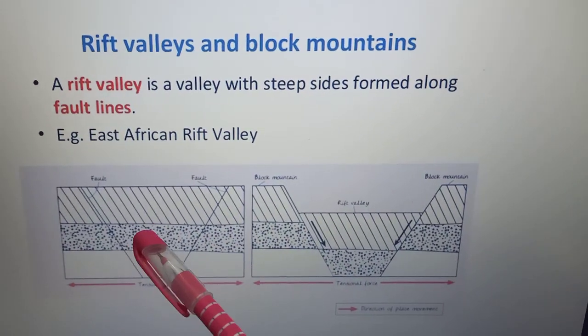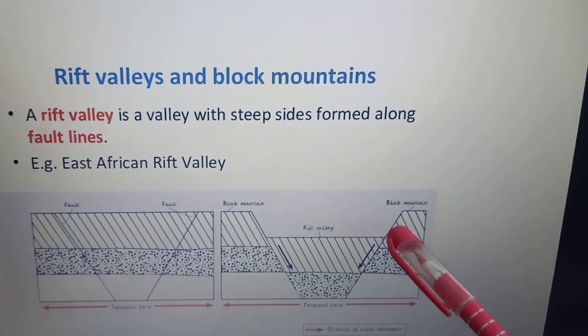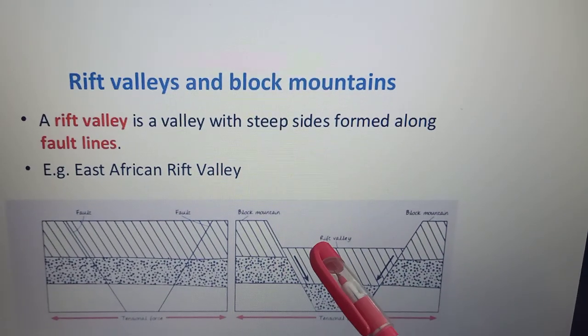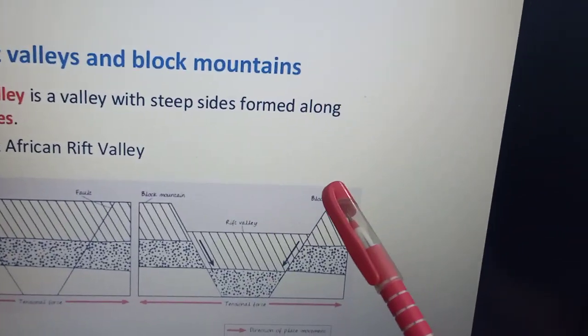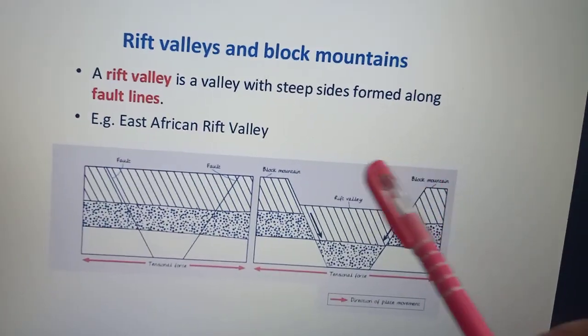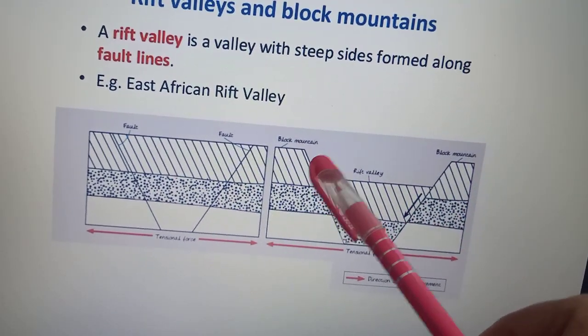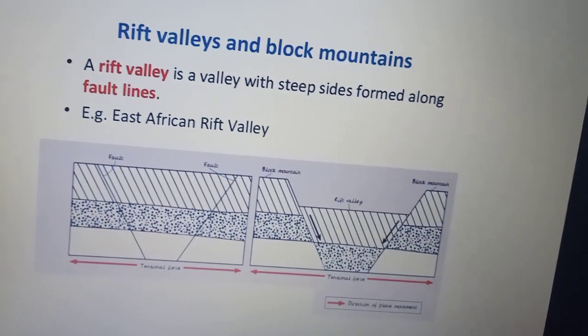Over here, if you see, there were two parallel faults. Now, when the rocks sink down, a rift valley is formed and the block mountains on either side are much higher as compared to this central part. They are referred to as the block mountains.